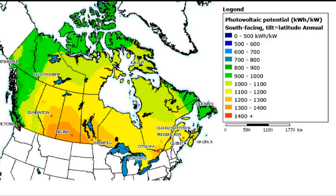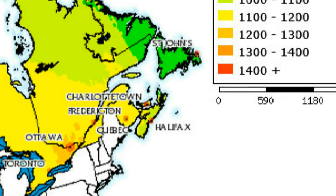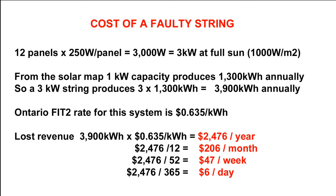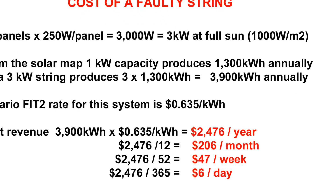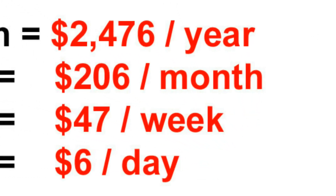What is the financial impact of a lost string? Let's do the calculation, starting with a solar map to see how much revenue we are losing. For this location in southern Ontario, annual output is 1300 kilowatt hours per kilowatt of AC installed capacity. For a typical string, the total string output under full sun is 3 kilowatts — that's the contribution of one string to the 250 kilowatt total system capacity. We can work out the revenue loss calculation as $6 a day. Left unrepaired, a single faulty string results in lost revenue of $2500 a year.